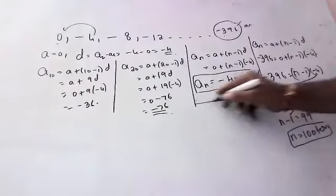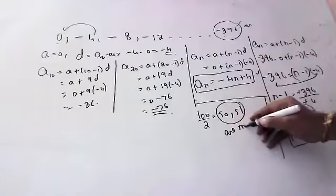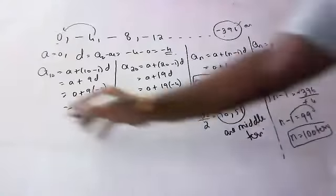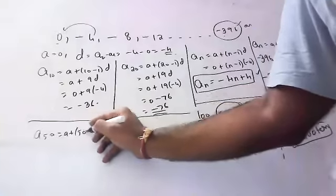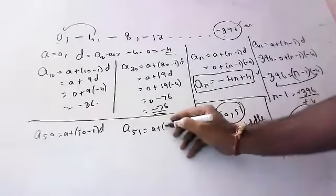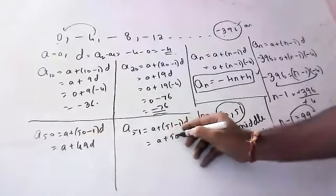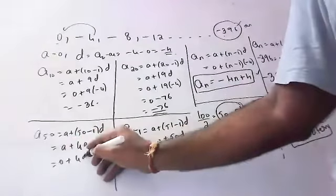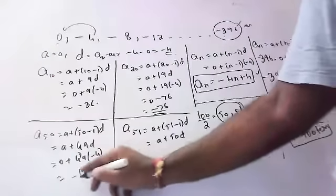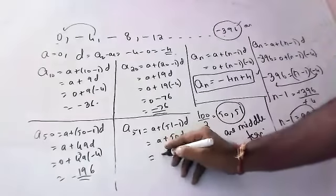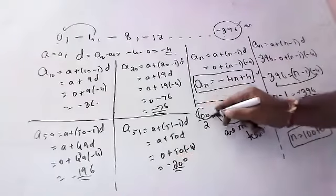Since there are 100 terms, 100 ÷ 2 = 50, so the 50th and 51st are the middle terms. For a50: 0 + 49 × (−4) = −196. For a51: 0 + 50 × (−4) = −200. So the two middle terms are −196 and −200. There are two middle terms because 100 is an even number.